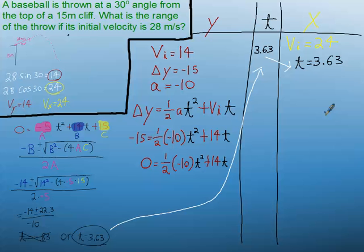Great. So we know that it's in the air for 3.63 seconds, and we also know that in the x direction, it's flying 24 meters every second. So finally, if you go 24 meters to the right every second, and you do that for 3.63 seconds, then you get a horizontal range on the shot of 87 meters.